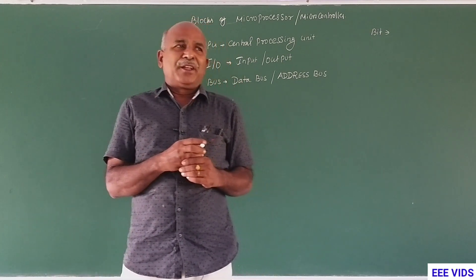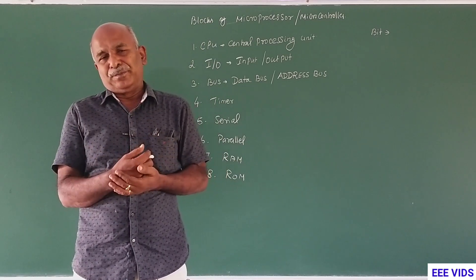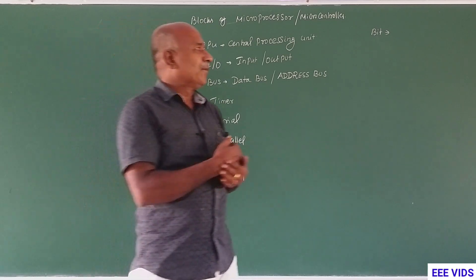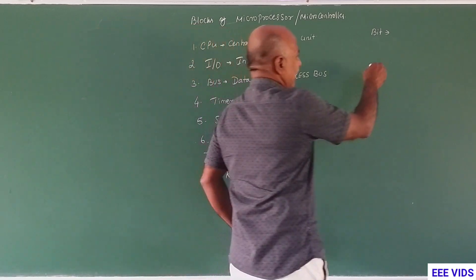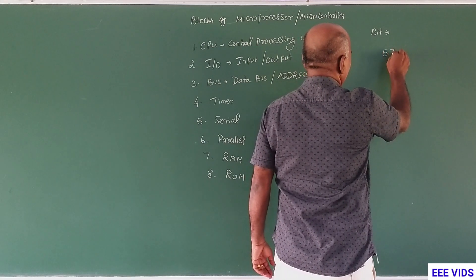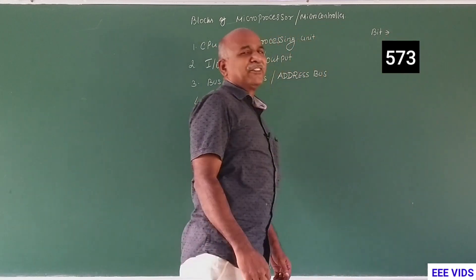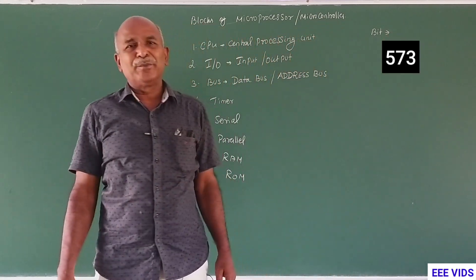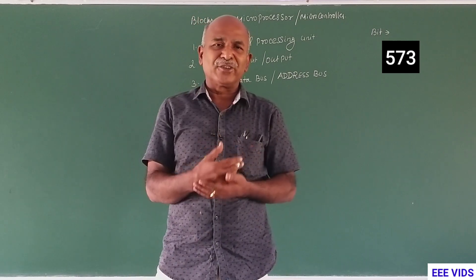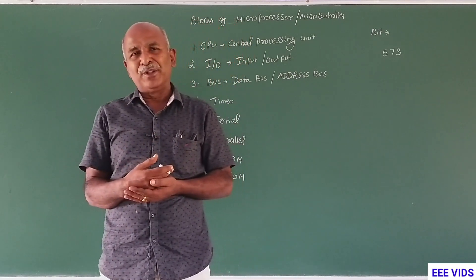Now, we will say decimal number. For example, 573 is a decimal number. We will learn the number system: decimal number system, binary number system, octal number system, hexadecimal number system. So we will learn the number system.